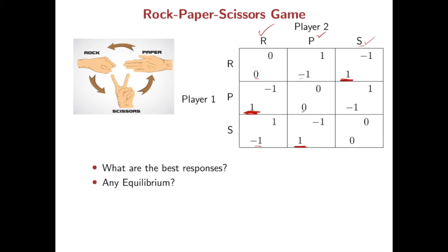Similarly, we can find player 2's best response against player 1's action. Against player 1's Rock, Paper is the best response. And against Paper, Scissors is the best response. And against Scissors, Rock is the best response. It is easy to find all the best responses, but there is no mutual best response.